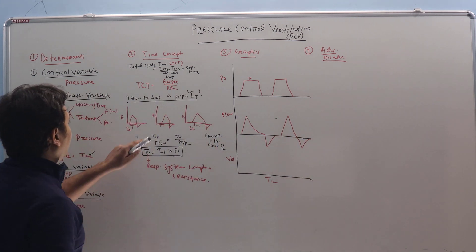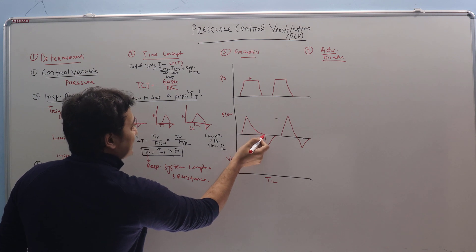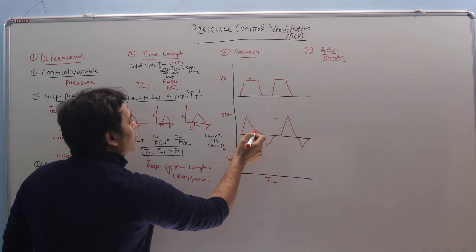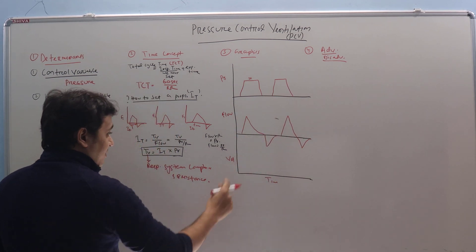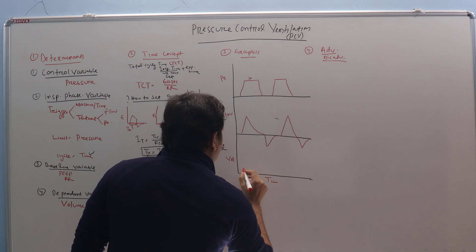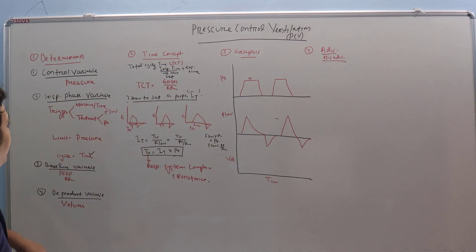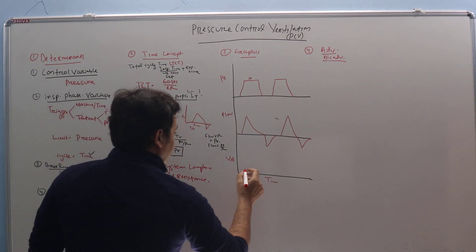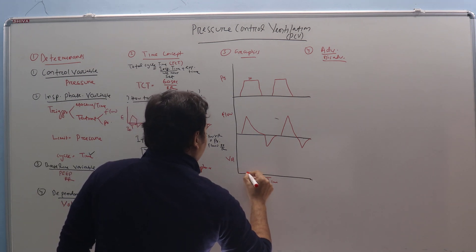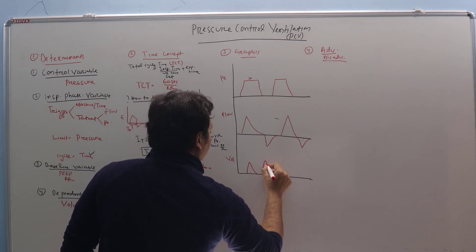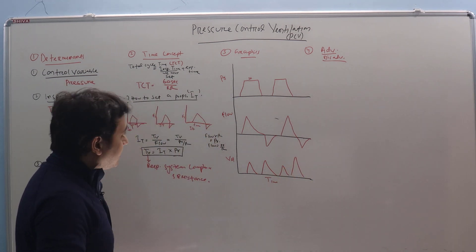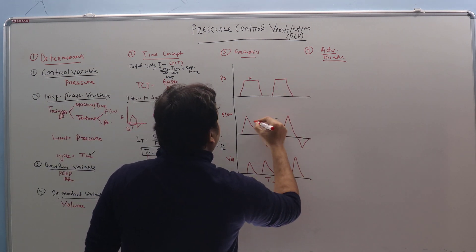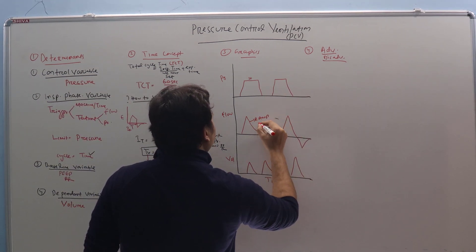We have to be careful that the flow does not truncate before it reaches the baseline, meaning we could have given more Inspiratory Time to produce more tidal volume. As for volume, it is not fixed because you have not set it anywhere — volume will change depending upon the resistance and compliance of the system, so it will be variable and the height of the volume scalar will not be the same. This is the decelerating ramp flow pattern.